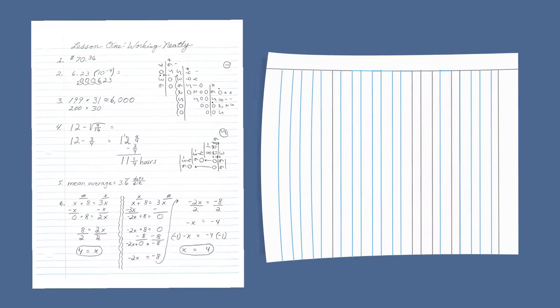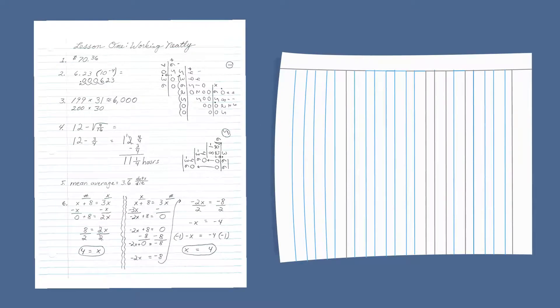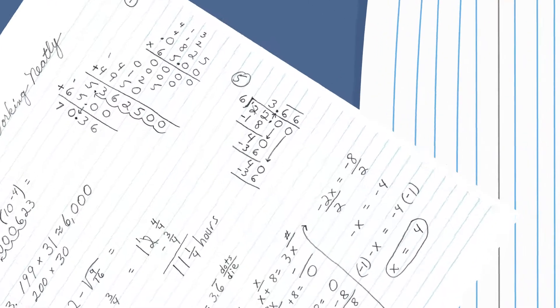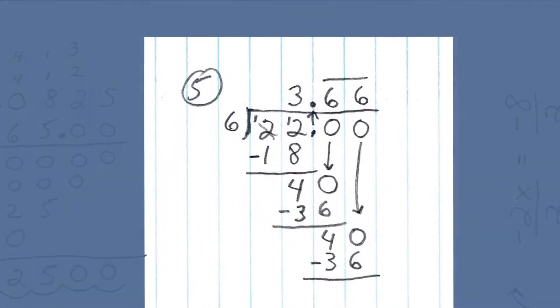You can try this for yourself. Turn your lined paper sideways and set up a division problem using the same format you see on the inside of your color illustration card for Lesson 1, Problem 5. In our first example, we'll use one-half, one divided by two. Put the number one inside the division bracket and the number two outside on the left.